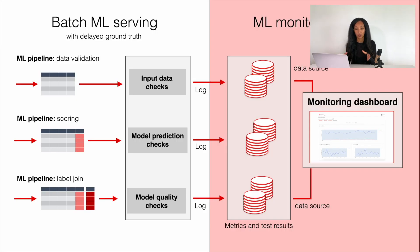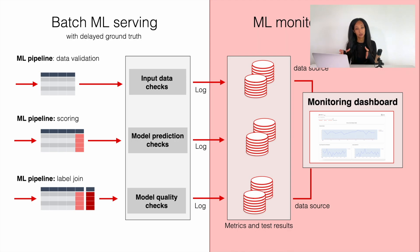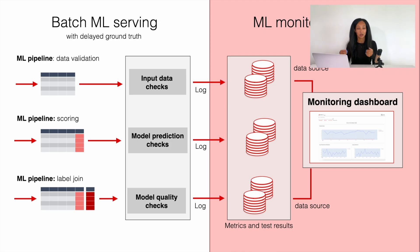Now let's move on to batch machine learning monitoring service in a little more detail. You can create different pipelines which help you calculate metrics for different types of analysis. For example, you can create a dedicated pipeline for data validation and run it every time you have a new batch of data or on a cadence. After you calculate all these metrics, you need to log them to a metrics and test results database or object store. You can then connect your dashboarding system to this data storage and implement any dashboard you like. Together with data validation pipelines, you can create more pipelines — for example, related to model output checks or model quality metrics — and also log all this data to your metrics and test results storage.